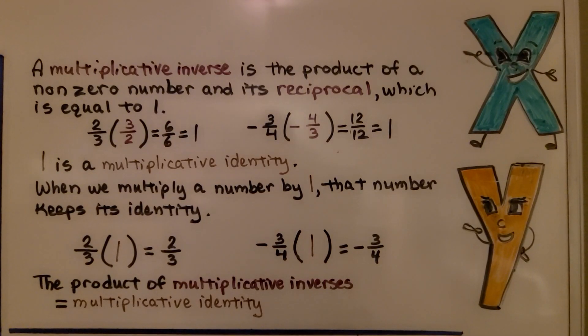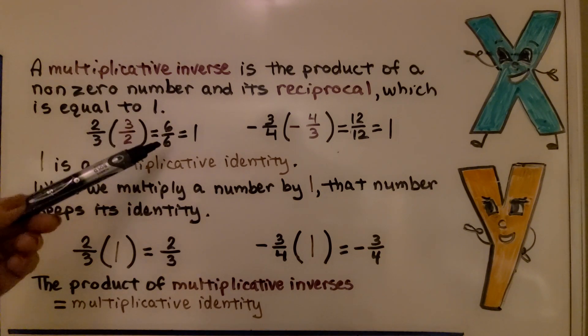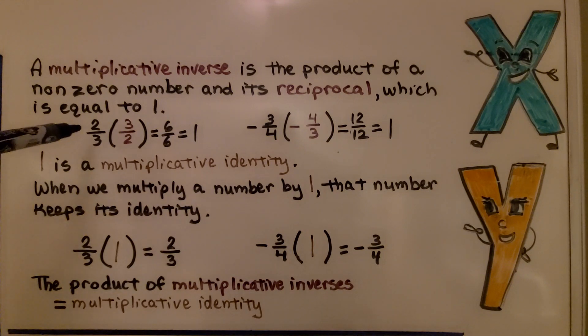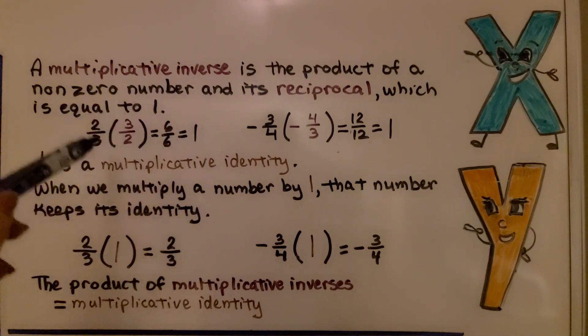Now, there's also a multiplicative inverse and a multiplicative identity. A multiplicative inverse is the product of a non-zero number and its reciprocal, which is equal to 1. So, we have 2 thirds, its reciprocal, we flip it around and that's 3 halves. We do 2 times 3, which is 6, 3 times 2, which is 6, we have 6 sixths, that's equal to 1. So, when we multiply this number times its reciprocal, it's equal to 1. That's a multiplicative inverse, it's the product of a non-zero number and its reciprocal.